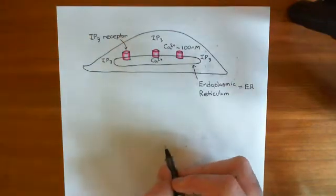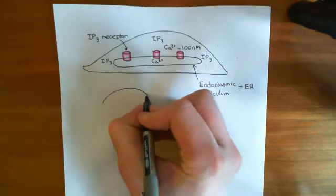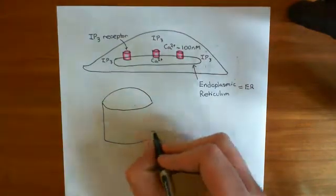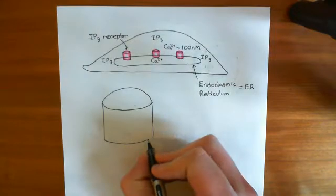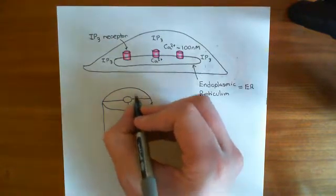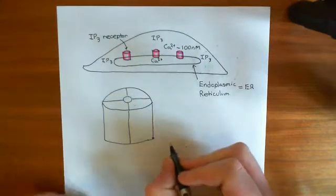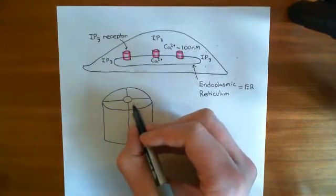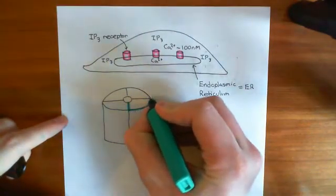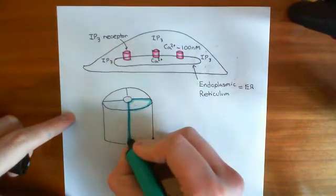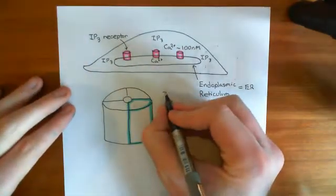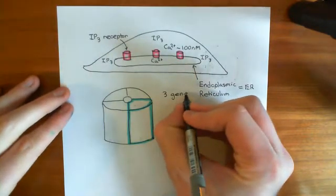Let's look at the IP3 receptor's more in-depth structure. The IP3 receptors are a tetramer — made up of four proteins. There are three genes in the human genome which can code for proteins used to make up a quarter of the IP3 receptor. So each one of the four subunits can be made from one of three different proteins, with three genes coding for these subunits that make up the IP3 receptor.